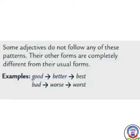Some adjectives do not follow any of these patterns — their other forms are completely different. Example: good → better → best. Good ki spelling G-O-O-D; comparative is better (B-E-T-T-E-R); superlative is best (B-E-S-T) — sab se achcha. Bad → worse (W-O-R-S-E) → worst (W-O-R-S-T). Bad yaani bura; worse yaani usse bhi kharaab; worst yaani bilkul kharaab.